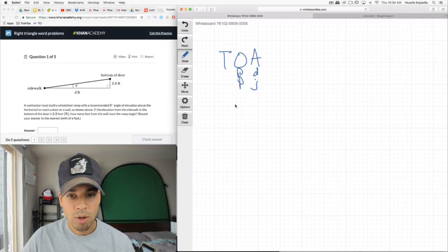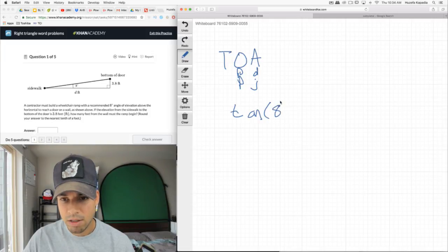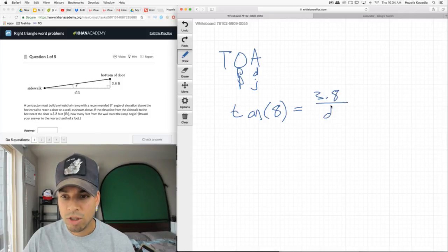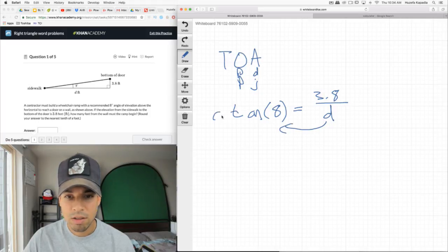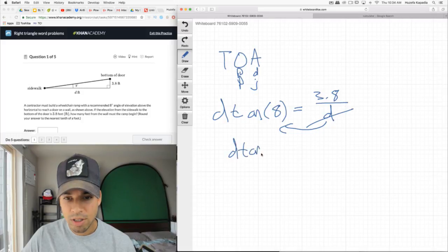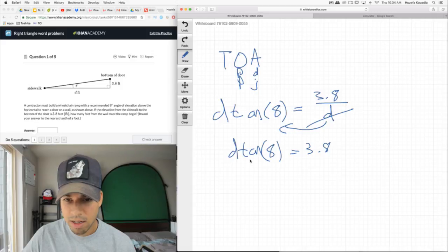If we have SOHCAHTOA, tangent is opposite over adjacent. So if we take tangent of 8 degrees and set that equal to opposite, which is 3.8, over adjacent, which is d, we have an equation that we can now solve for d. First I'm going to isolate d by multiplying it over here.